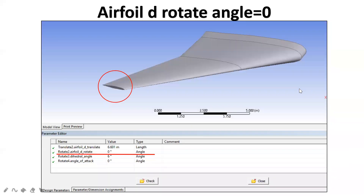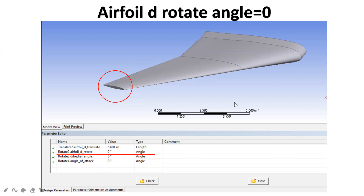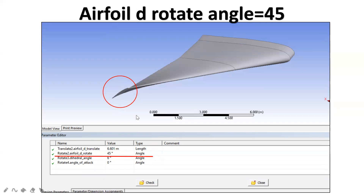Next is the airfoil D-rotate angle. D denotes the edge airfoil — the building block of the wing. When this edge airfoil rotates and makes an angle, we call that the D-rotate angle. We first keep the edge airfoil at zero degrees, then move it to a certain angle — here shown at 45 degrees — so you can see the difference.